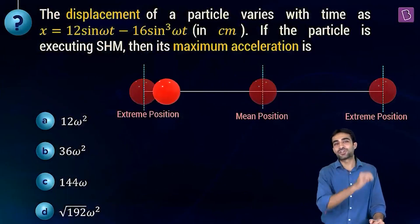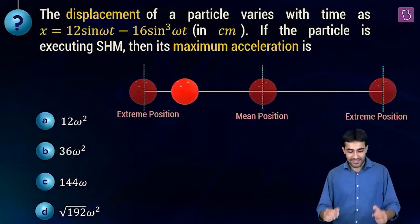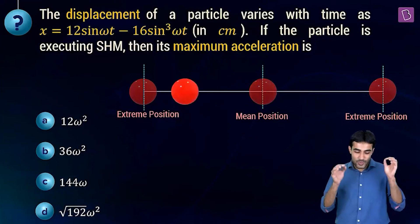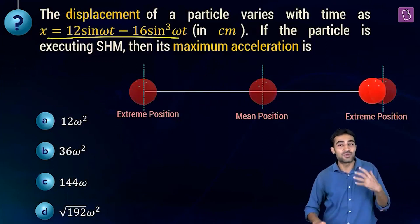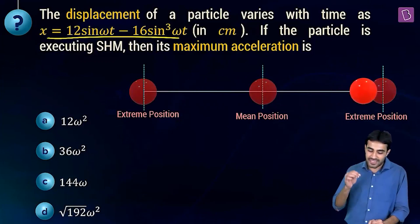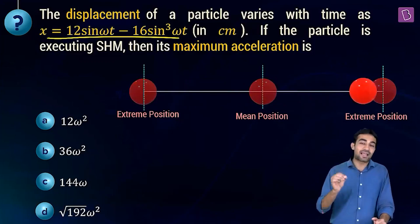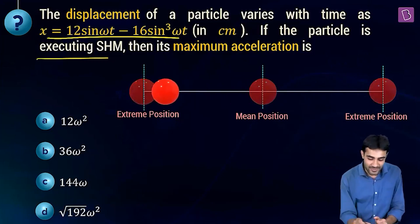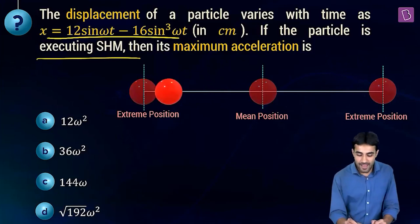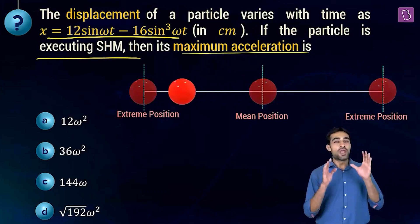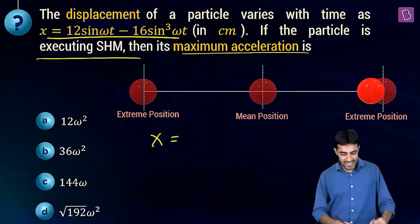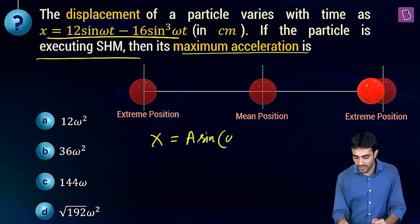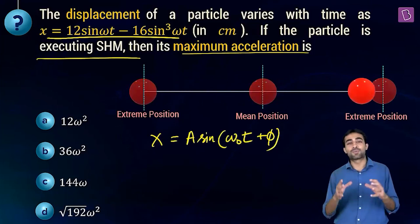Next question is on acceleration in simple harmonic motion. The displacement of a particle varies with time as x = 12·sinωt − 16·sin³ωt. The particle is executing SHM, and we have to find its maximum acceleration. Since the particle is confirmed to be in SHM, we just need to find the maximum acceleration.